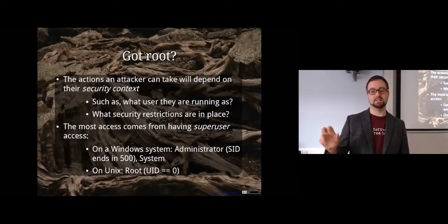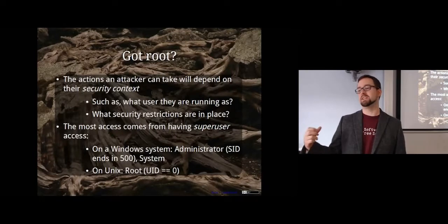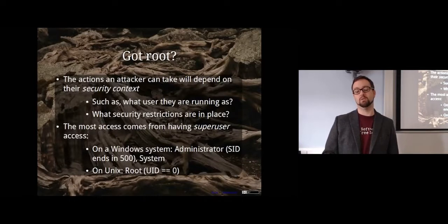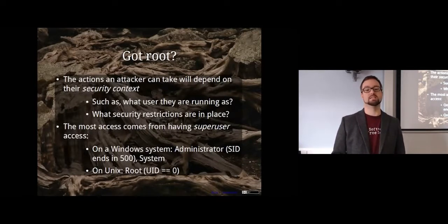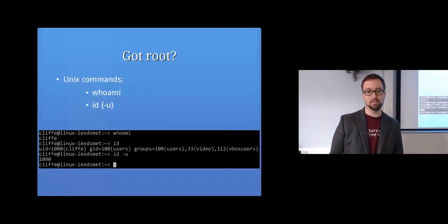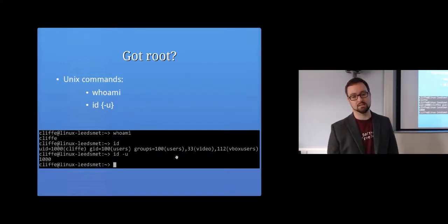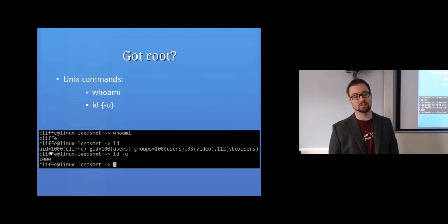On a Windows system, if your SID ends with 500 then you are an administrator; if you've got system access, and on Unix you're root if UID is zero. So we want to find out information about our security context — that'll tell us what we can do. On Unix you can use the command `whoami` which will tell you your username, and `id` will tell you your UID, GID, and groups. If that came back as zero, you're root and can do anything; if you're running as a normal user, restrictions are in place.